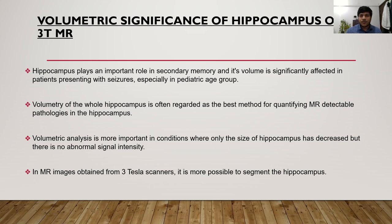Volumetric significance of hippocampus on 3T MRI: hippocampus plays a significant role in secondary memory and its volume is significantly affected in patients presenting with seizures, especially in the pediatric age group. Volumetry of the hippocampus is often regarded as the best method for quantifying MR detectable pathologies. Volumetric analysis is more important in conditions where only the size of hippocampus has decreased but there is no abnormal signal intensity. In MR images obtained from 3 Tesla scanners, it is more possible to segment the hippocampus.